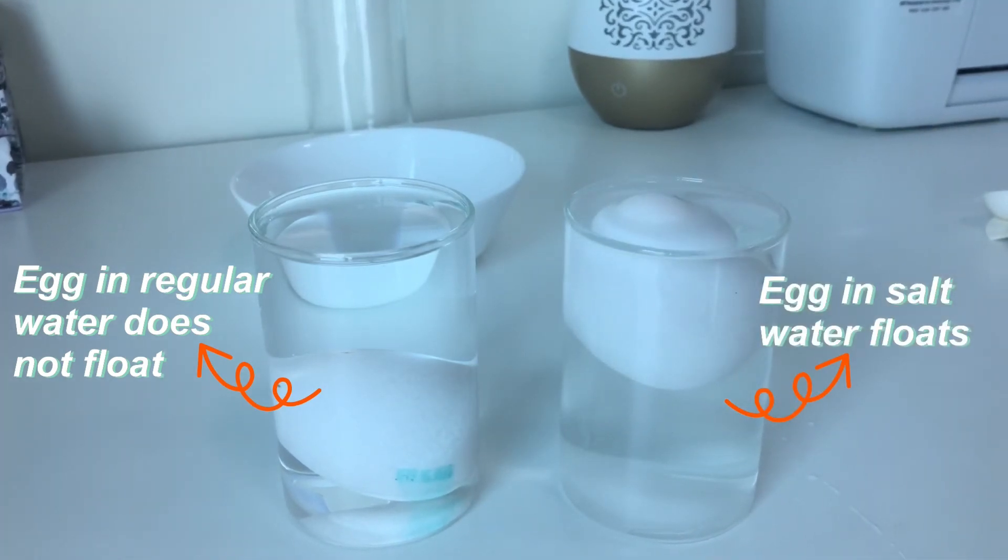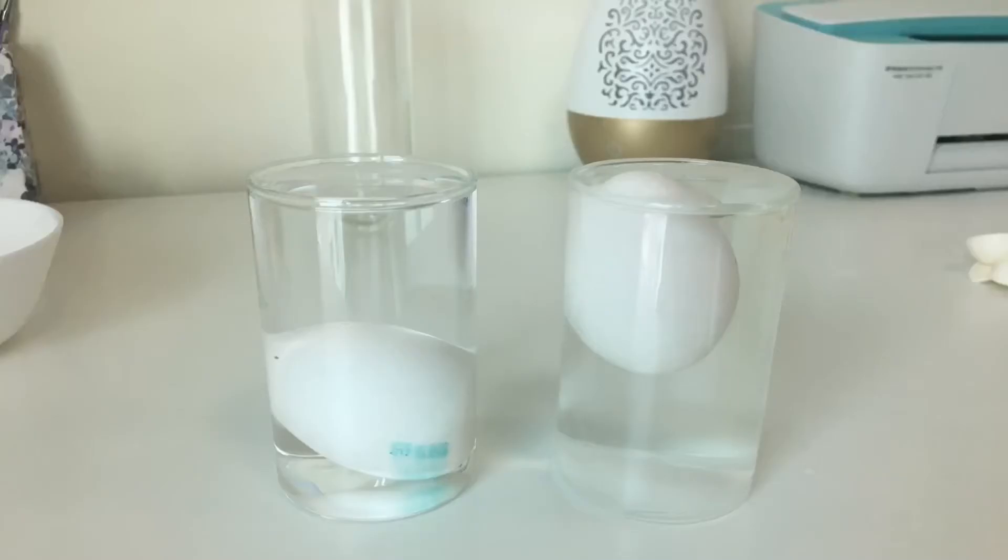Can you guess the reason? We all know that egg is denser than water. And because it is denser, the egg sinks to the bottom. But if you see in salt water, the egg floats instead of sinking.